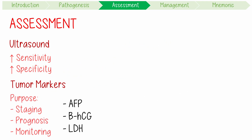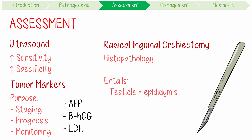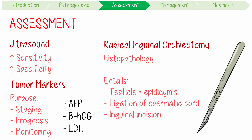If cancer is suspected based on ultrasound, patients should almost always undergo a radical inguinal orchidectomy to facilitate histopathological assessment. This entails three things: removal of the entire testicle and epididymis, ligation of the spermatic cord at the level of the internal inguinal ring, and surgery performed via an inguinal incision. A trans-scrotal approach or percutaneous biopsy should not be done.